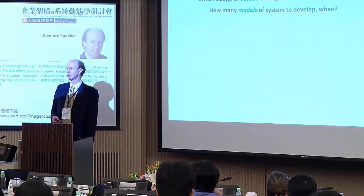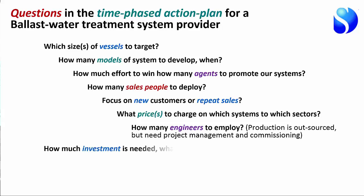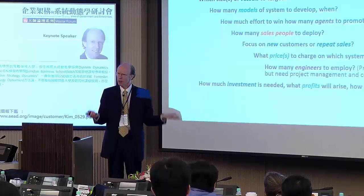But here are the decisions that one of these equipment suppliers has to make: Which vessels should I target? How many models of equipment should I launch? Should I just have one model or three different models of different sizes? How much effort should I put into winning the agents who will sell to the shipping operators? How many salespeople should I employ? How much should I focus on new customers or repeat sales? What price should I charge? How many engineers should I employ? How much investment do I need? What profits will arise? What cash flow will come out? How are you going to answer those questions?